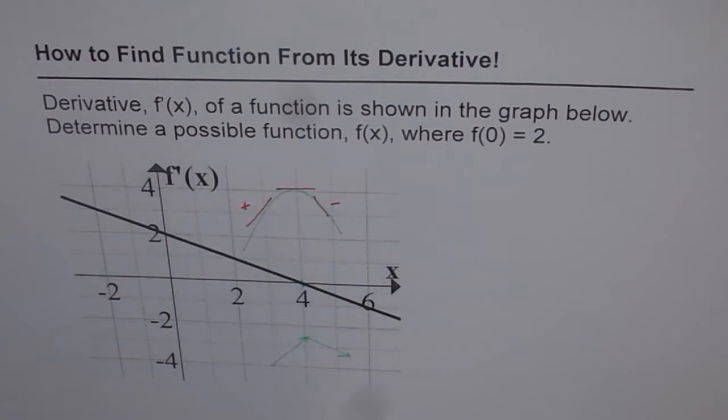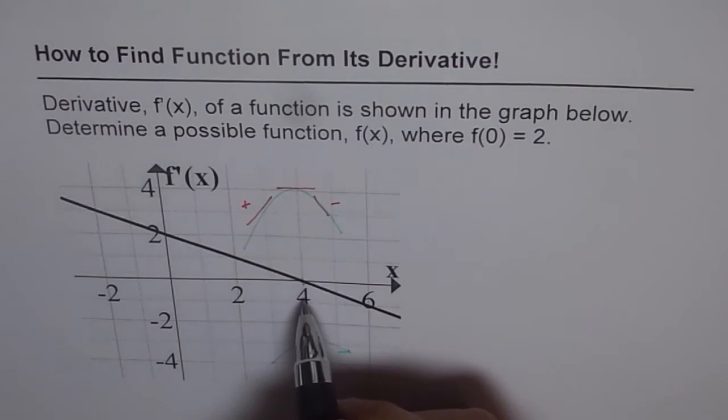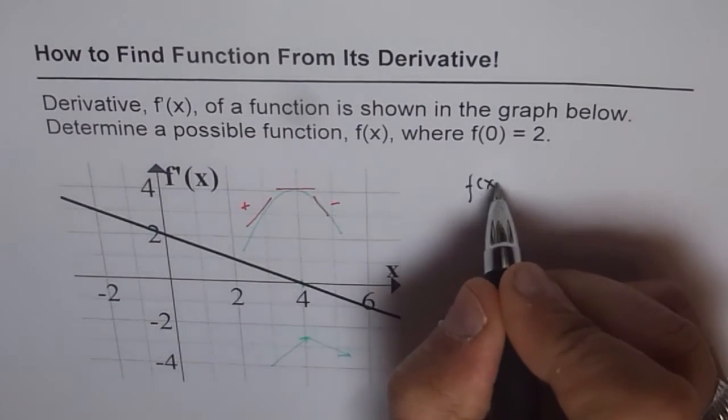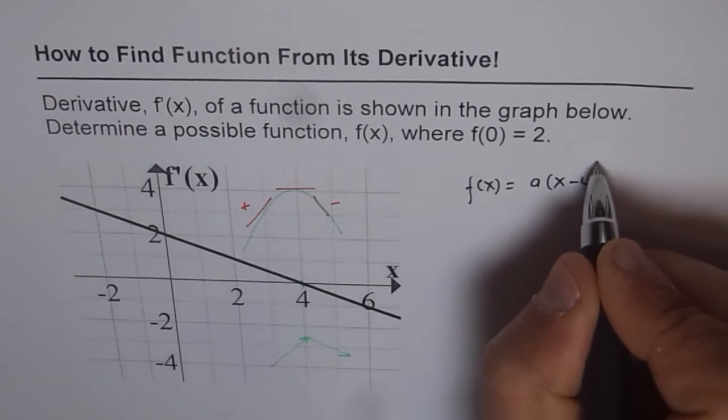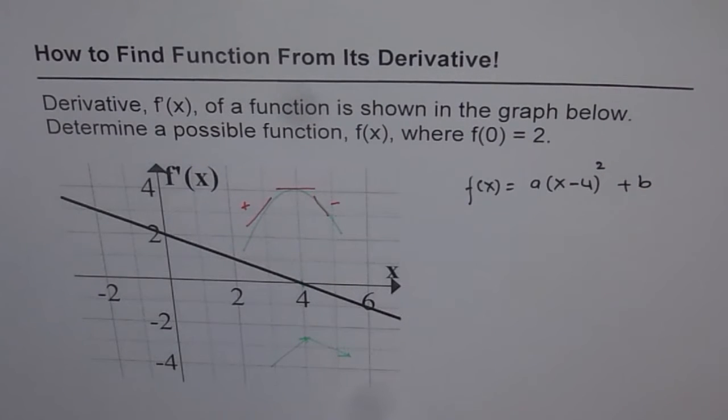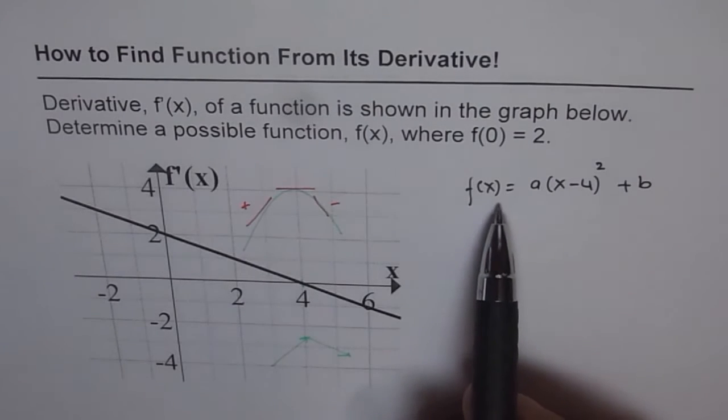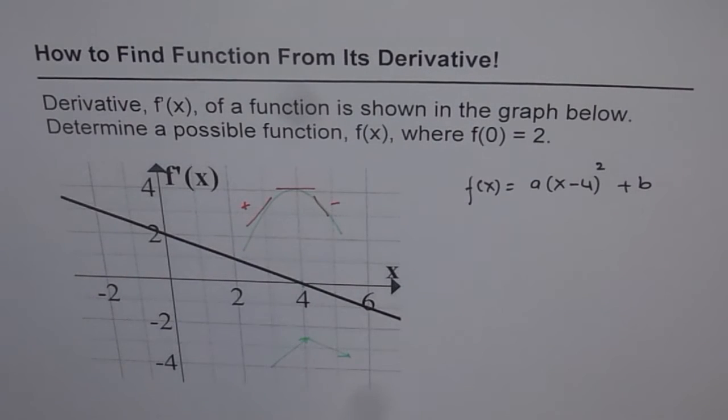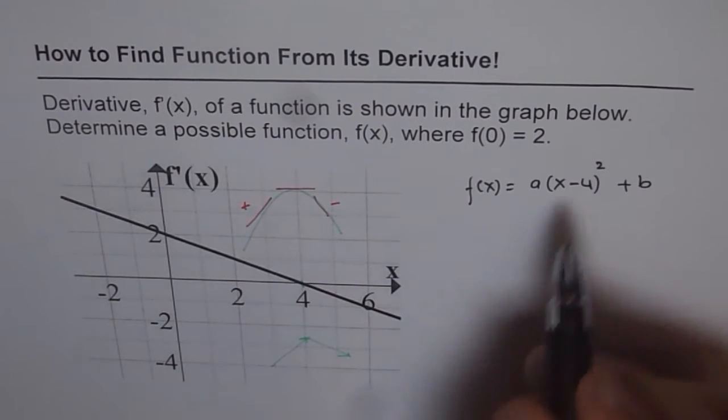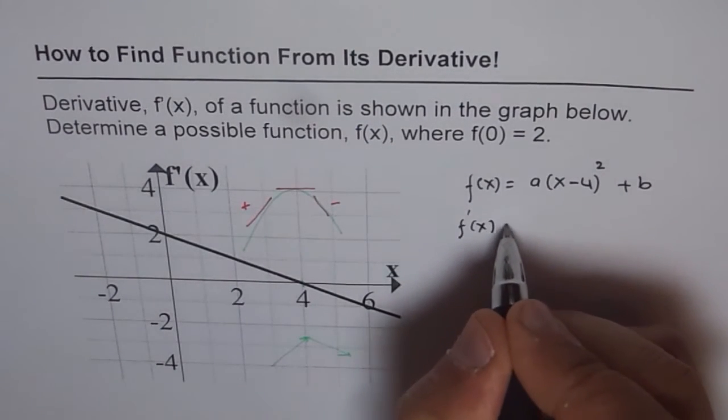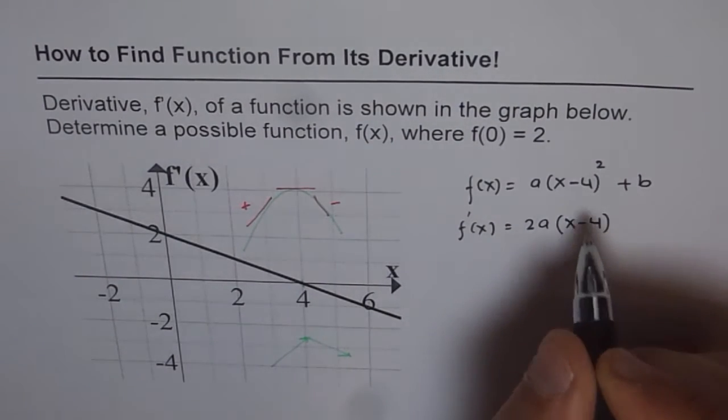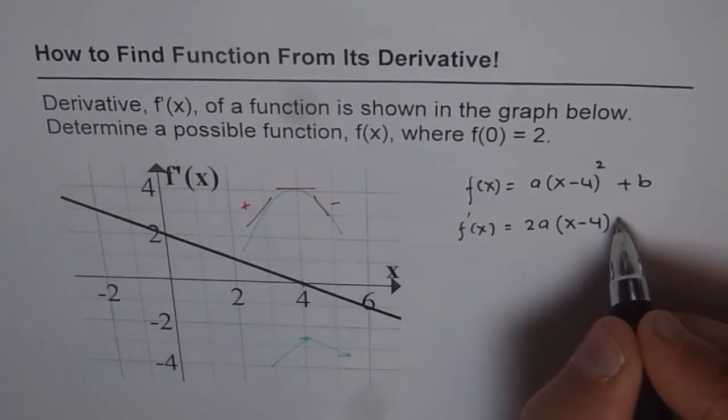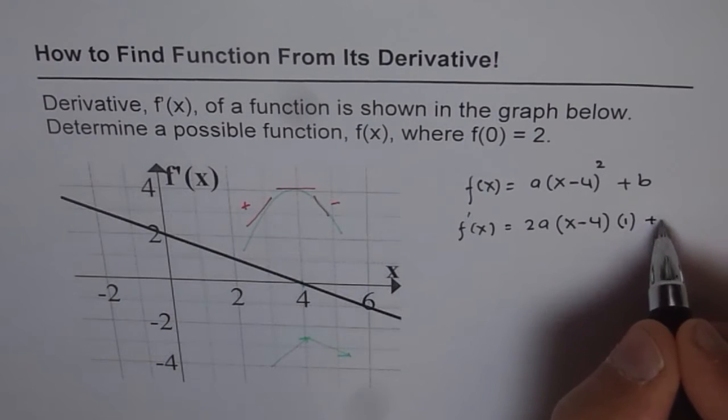So what we can do is write down a tentative equation of this. So equation could be vertex at 4. We can write this as f(x) equals a times (x - 4)² plus b. So that could be a general equation which should represent the function whose derivative is given here. So let us start from here. Now, what is the derivative of this function? f'(x) will be equals to 2 times a(x - 4) times 1, and this one is 0. So that is the derivative f'(x).